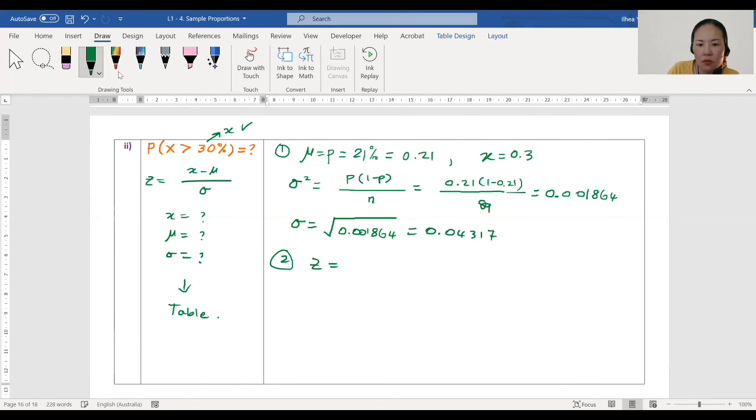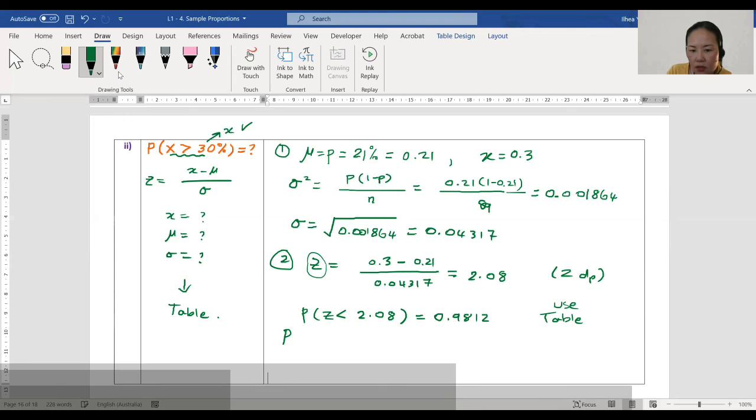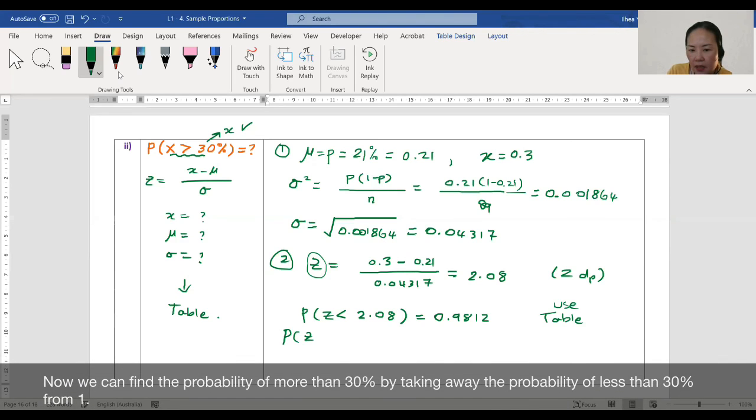x is 0.3, minus 0.21, over 2.08. This is the z-score, isn't it? So I would say z is less than 2.08. You use the table and get 0.9812.